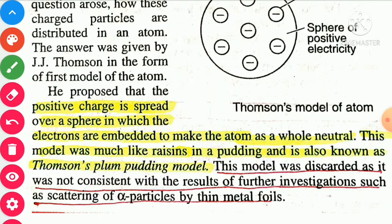In other words, according to Thomson's atomic model, an atom is like a watermelon — spherical in nature. Inside it, the cloud of protons is compared with the fleshy part and the seeds are compared with the electrons. The electrons are found to be embedded in the cloud of protons. It looks like raisins in pudding, therefore this model is also called Thomson's plum pudding model.